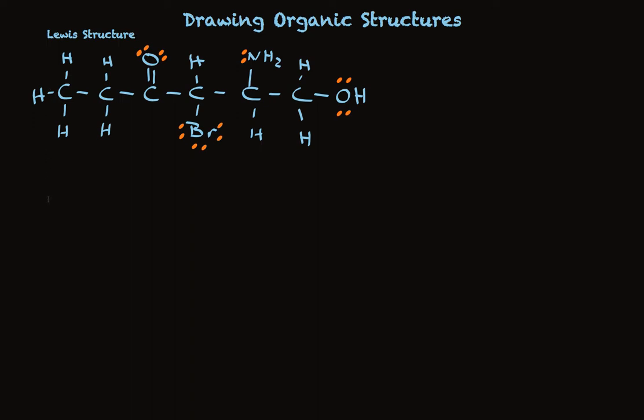One of them is called a condensed formula. And this is a more compact way of drawing structures that writes the carbons and hydrogens all together if it's unambiguous which hydrogens and carbons are attached to which. And you see it skips drawing a lot of the bonds, and it skips drawing out individual hydrogens when it's not necessary.